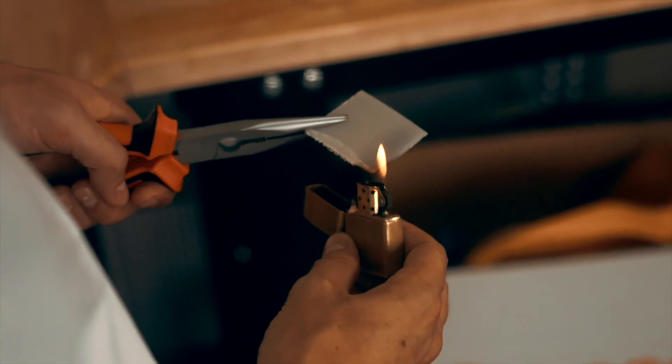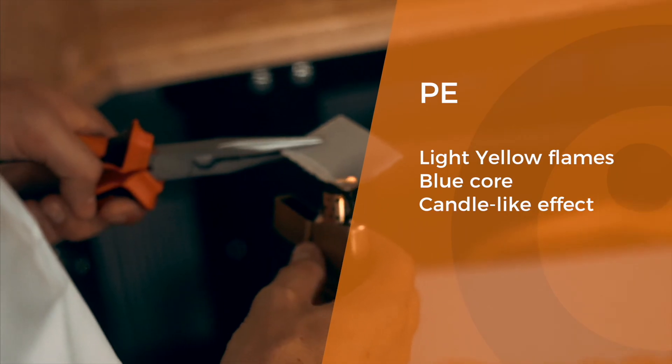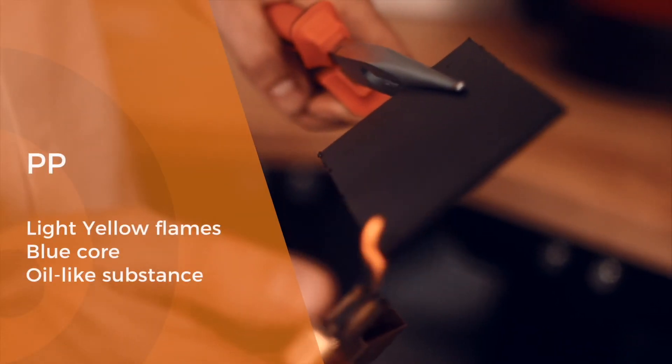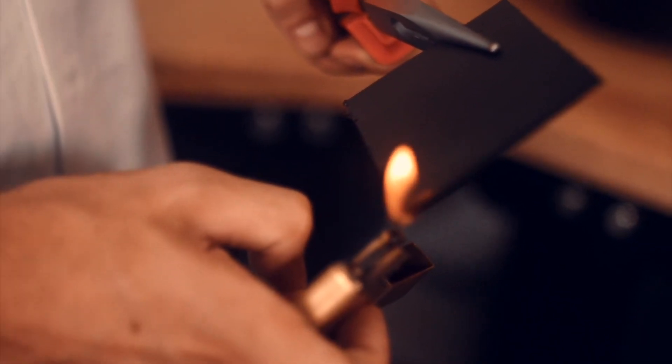PE results in light yellow flames with a blue core. The plastic will show a candle-like grease effect. PP results in the same yellow flame and blue core but the plastic itself will turn into an oil-like substance.